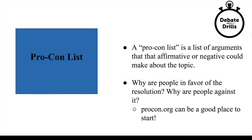One place that you might want to start is procon.org. This website has a bunch of different topics — for example, immigration or criminal justice reform — that defines the pros and cons for a particular idea or policy. This can be a great first outline of different arguments for and against a resolution. You can also reference anything that you found throughout your background reading or as you continue to do Google searches.